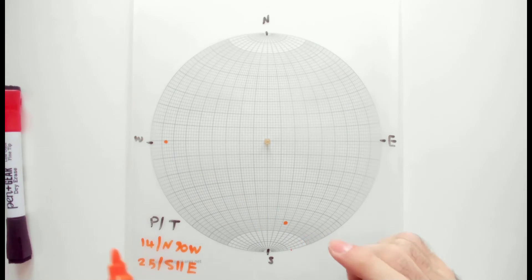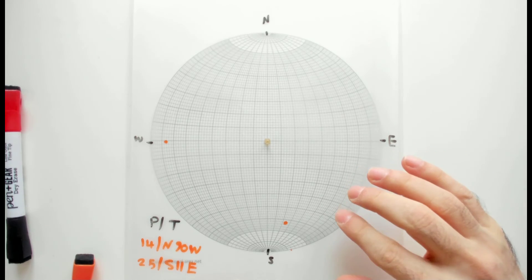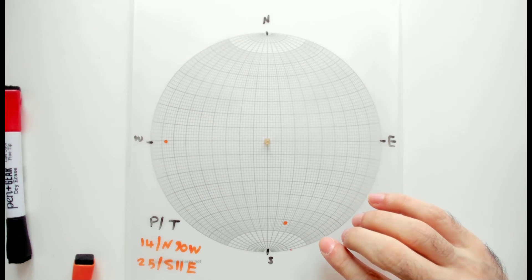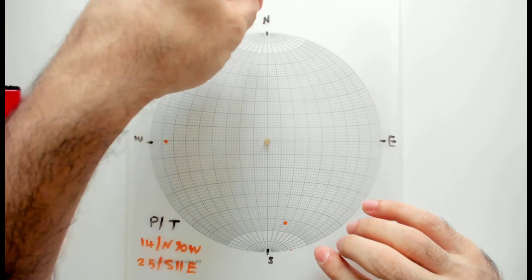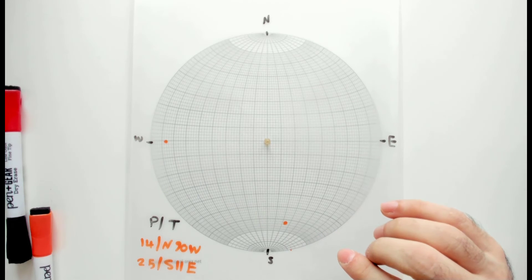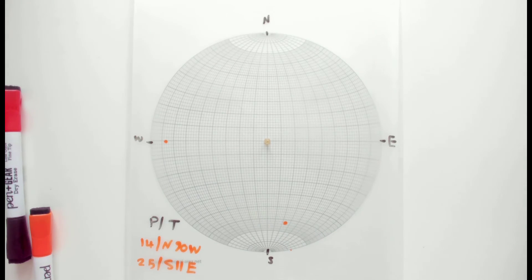I have one apparent dip here and one there. The solution here is very simple. As we know, all the apparent dips are gonna be on one plane. So what you need to do is place these two dots along one great circle. When you do that, you can trace that great circle, and that's going to be the plane that these two are sitting on. If you read the strike and the dip of that plane, then you answer the question.